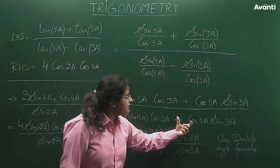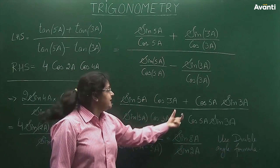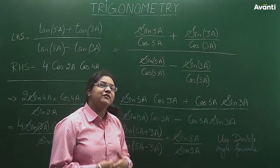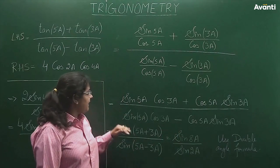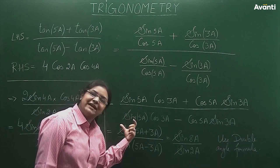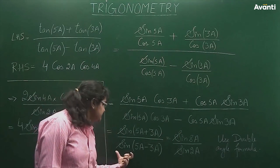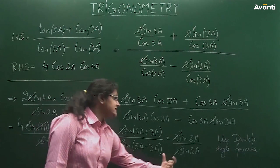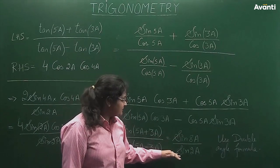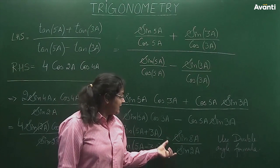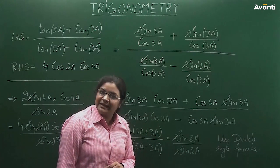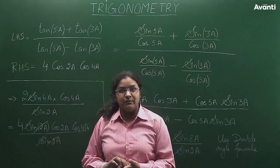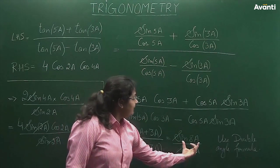Now, looking at the denominator, the difference is the minus sign, which changes the formula from sine of (a+b) to sine of (a−b). So the denominator is sine of (5a − 3a), which is sine of 2a. Now I have the expression in a simplified form. But the right-hand side is in terms of cosine, and involves 4a and 2a, so I need to bring things to a half-angle form.